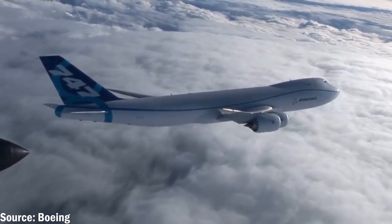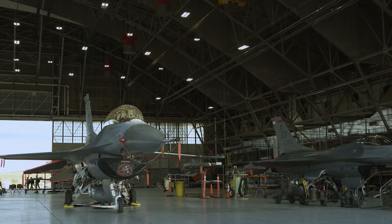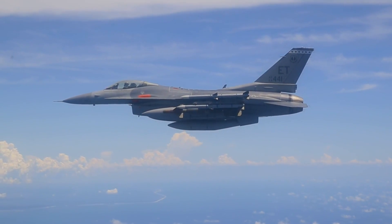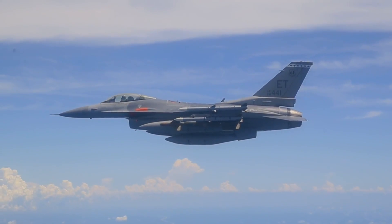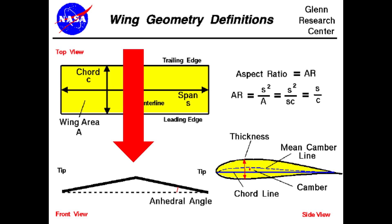By contrast, planes such as the F-16 are specifically designed to be unstable in flight, which is exactly why the F-16 has straight wings. These straight wings actually help the aircraft maneuver even better. The opposite of a dihedral angle is an anhedral angle, where the wings are angled downwards, and it has the opposite effect.